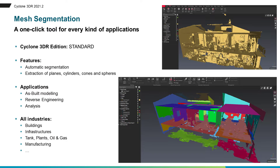Within the 2021.2 version, Cyclone 3DR provides a new tool for mesh segmentation. In one click, it will be easy to extract from one mesh the segmentation of the mesh model, as well as many geometrical features like planes, cylinders, cones, and spheres. This tool will help industries like buildings, infrastructure, or manufacturing to address asphalt modeling, reverse engineering, or any kind of analysis application.